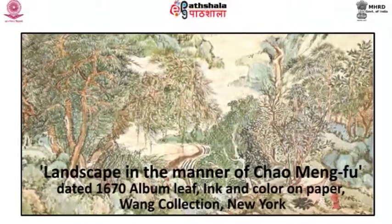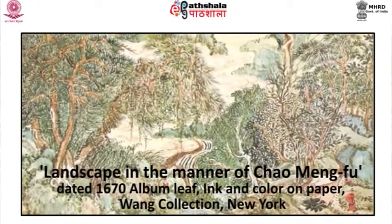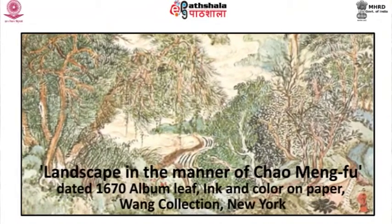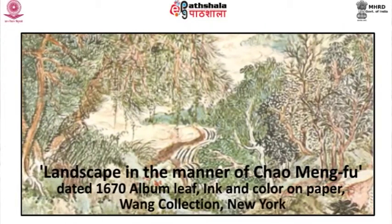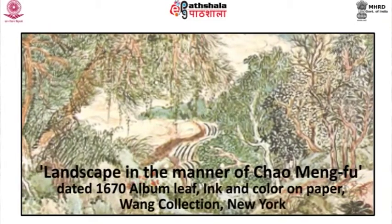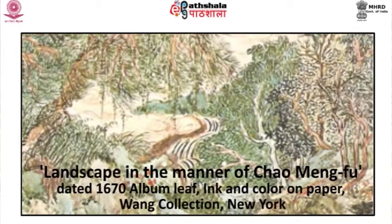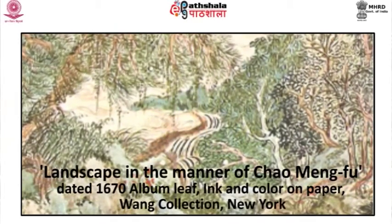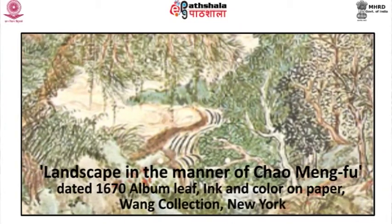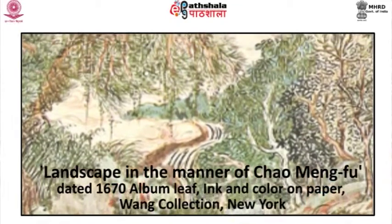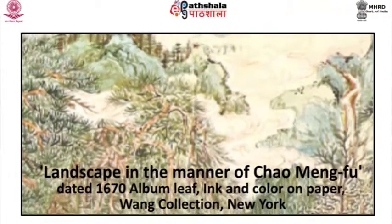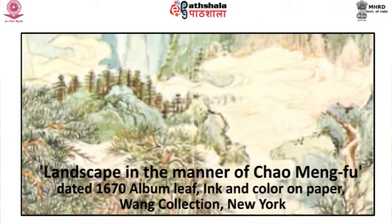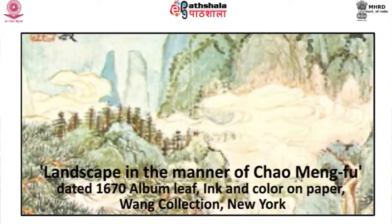His Landscape in the Manner of Chao Mengfu, dated to 1670, is an album leaf in ink and color on paper, at present in the Huang collection, New York. This painting is from an album done in imitation of various masters. The archaistic clouds, heavy green color, and cramped tortuous composition evidently refer to Chao's reworking of Tang or Five Dynasties landscape types. In the painting there is no sense of space or atmosphere, no real body to the forms, no feeling of grandeur in nature, and nothing that can be called skillful drawing.